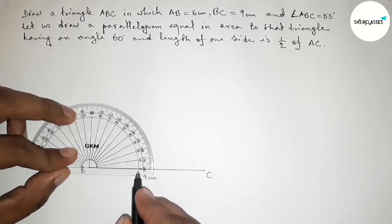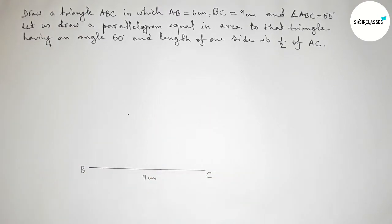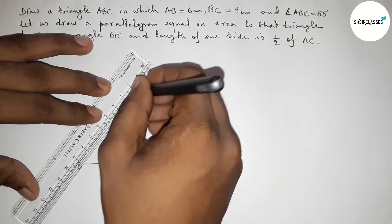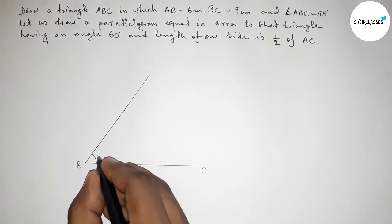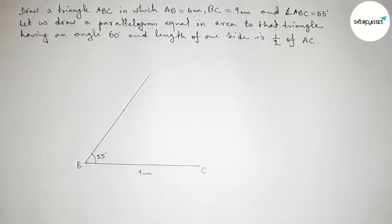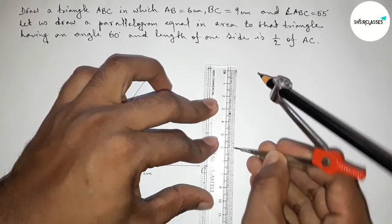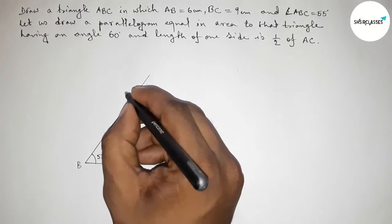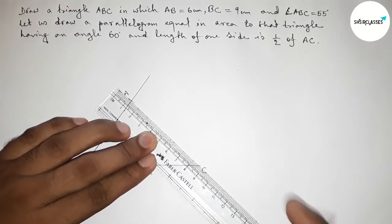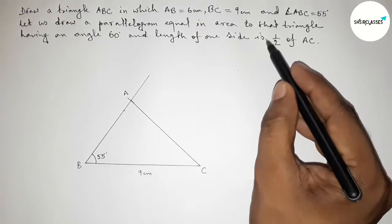Counting to 55 degrees — this is the 55 degree angle. Now we join the line to get the 55 degree angle at B. Taking 6 centimeters length by scale: 1, 2, 3, 4, 5, 6 — this is 6 centimeters. Putting the compass on point B and marking the arc, we take point A. Joining A and C gives us triangle ABC.